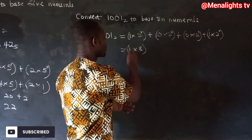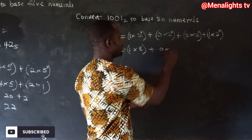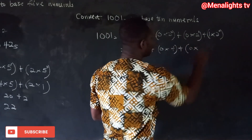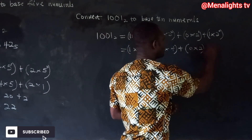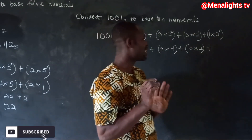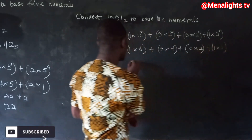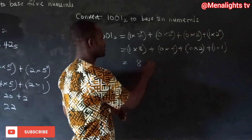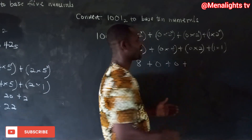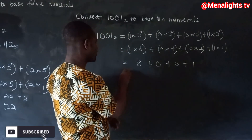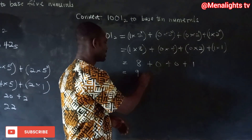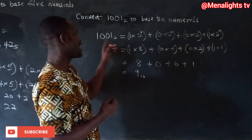Two to the three is two times two times two, which equals eight. Zero times four is zero. Zero times two is zero. One times two to the zero is one times one, which is one. So eight plus zero plus zero plus one equals nine in base 10. Therefore 1001 base two equals nine in base 10.